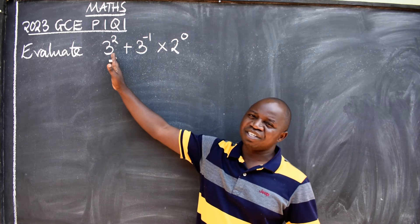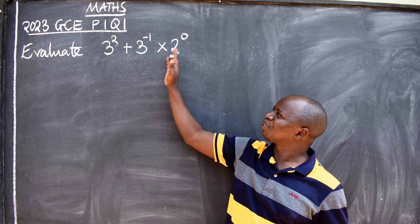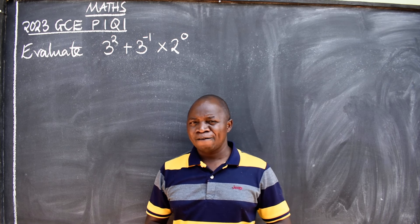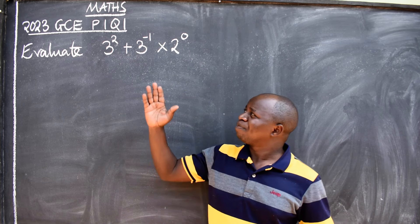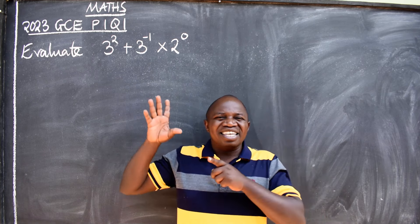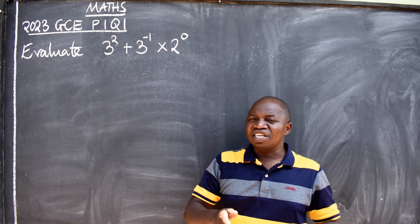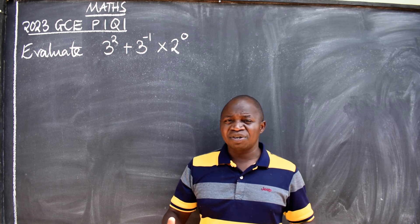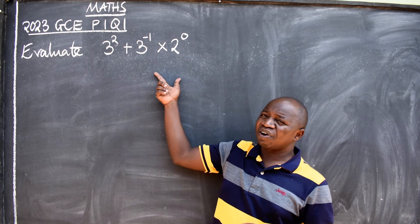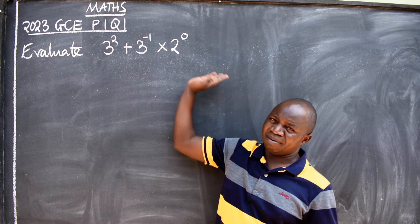Let's proceed. 3 to the power 2 plus 3 to the power negative 1 times 2 to the power 0. In this question, what have you observed? We have different operations—plus and multiplication. That tells you there is an application of BODMAS. What does BODMAS say? You need to multiply before you add. That's the rule. You cannot add here before you multiply. First you need to multiply, then you can add it. But before we can do that, we have to simplify them before we evaluate.